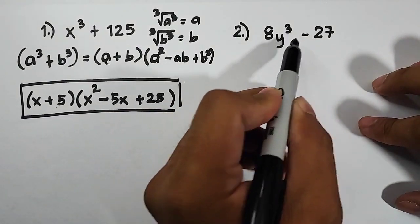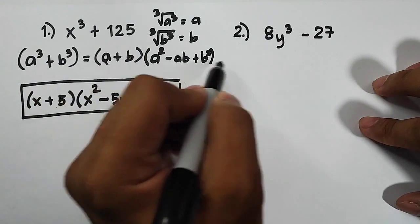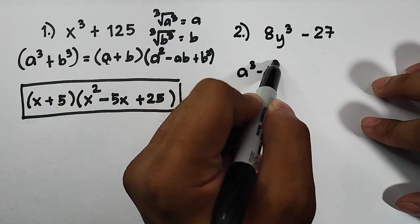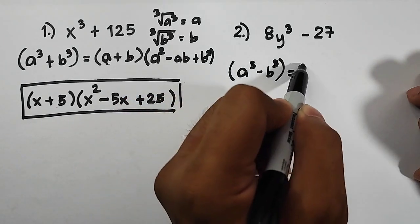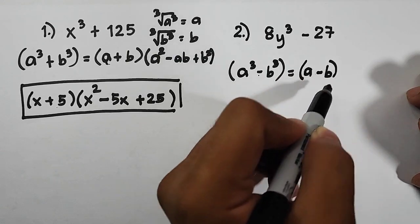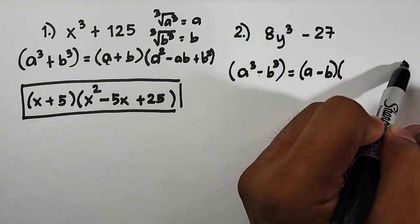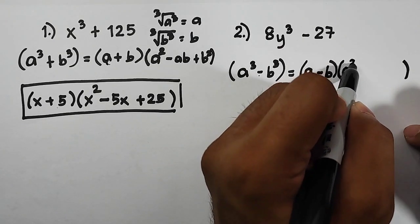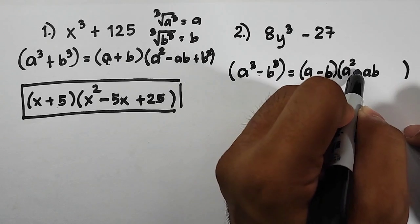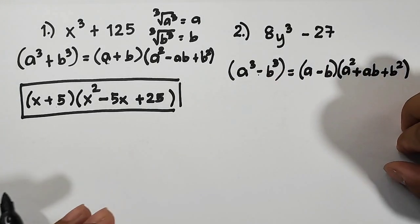Now this second example has a minus sign, meaning it is the difference of two cubes. The pattern here is similar but the signs differ. For a cube minus b cube: get the cube root of the first term, which is a; copy the minus sign; get the cube root of the second term, which is b — giving the binomial factor a minus b. For the trinomial factor: square the first term to get a squared; multiply a times b to get ab — and since this one is minus, this becomes plus ab; then square the last term to get plus b squared.